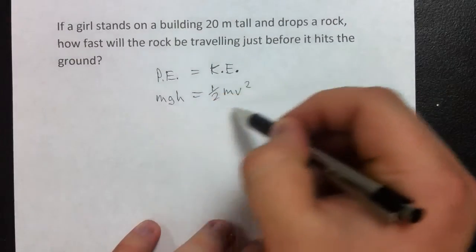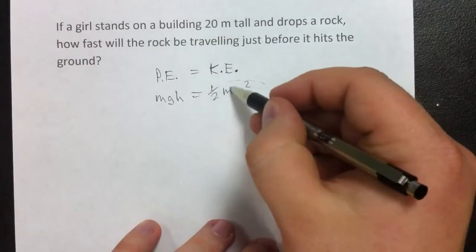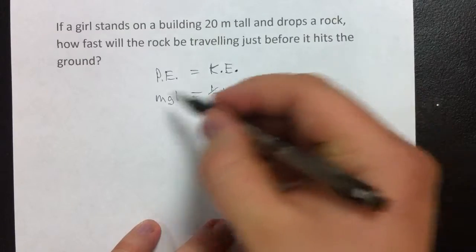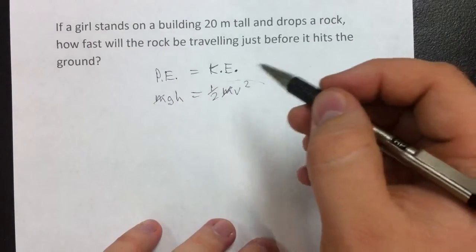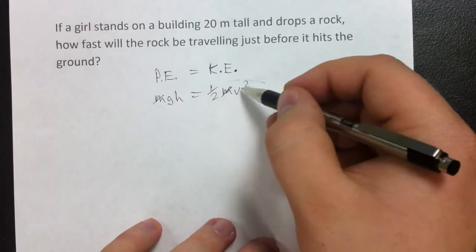This is the formula that we're going to be using to solve this problem. One thing I want you to note is that mass cancels here. It's the same mass on both sides, so it cancels. We're left with gravity times height is equal to one-half velocity squared.